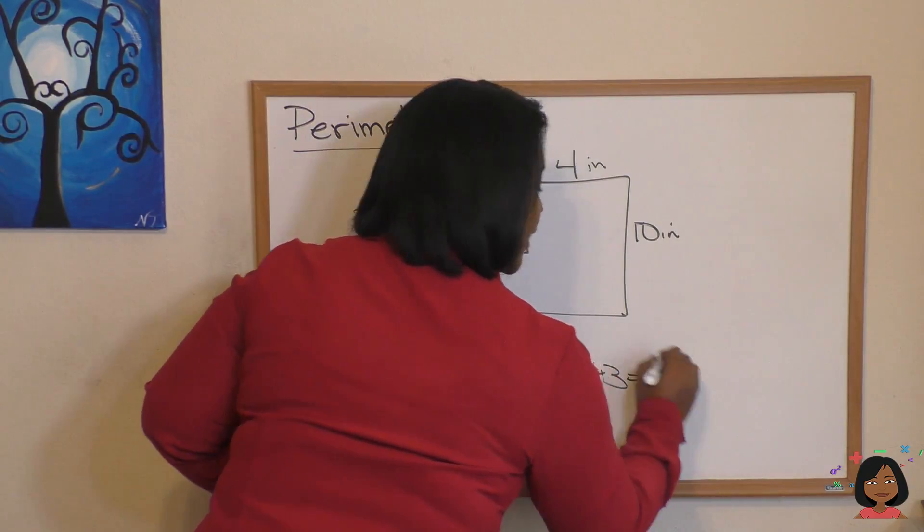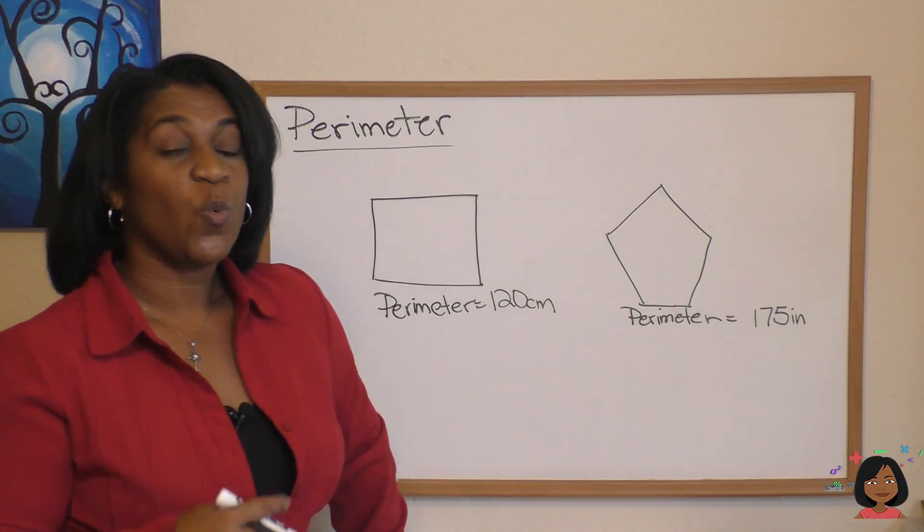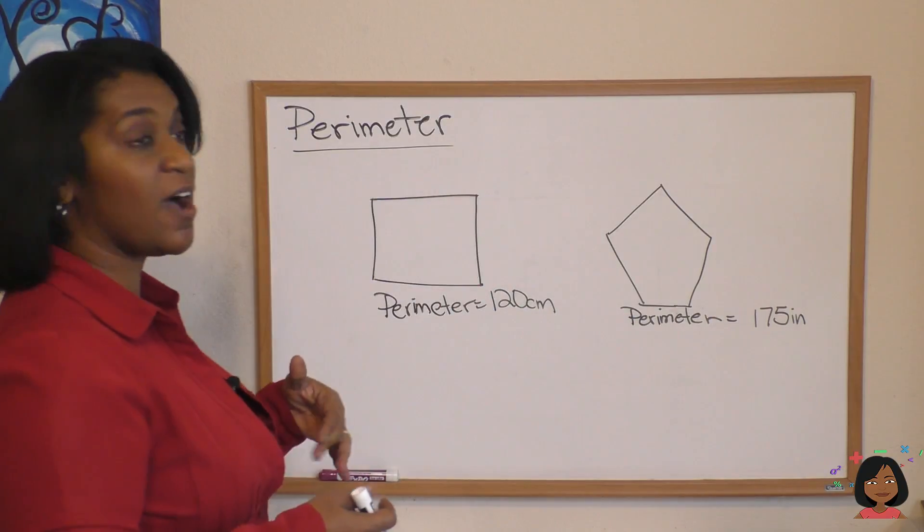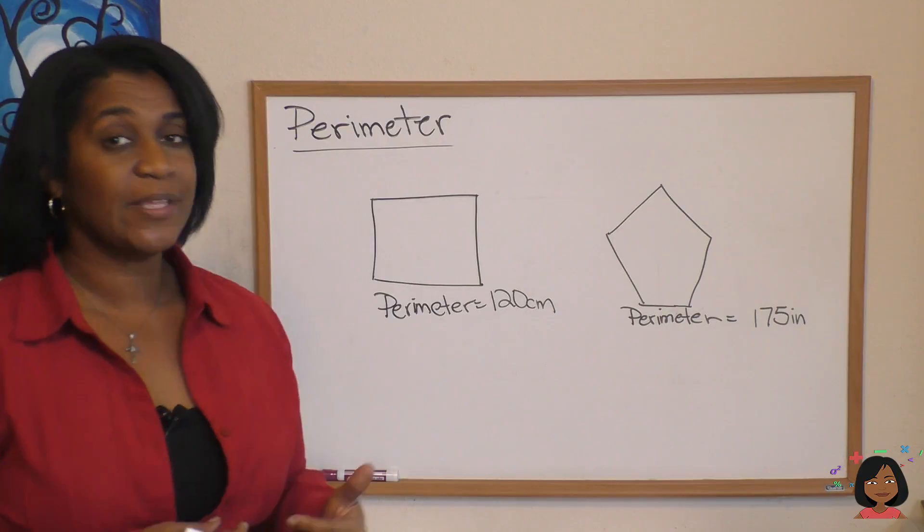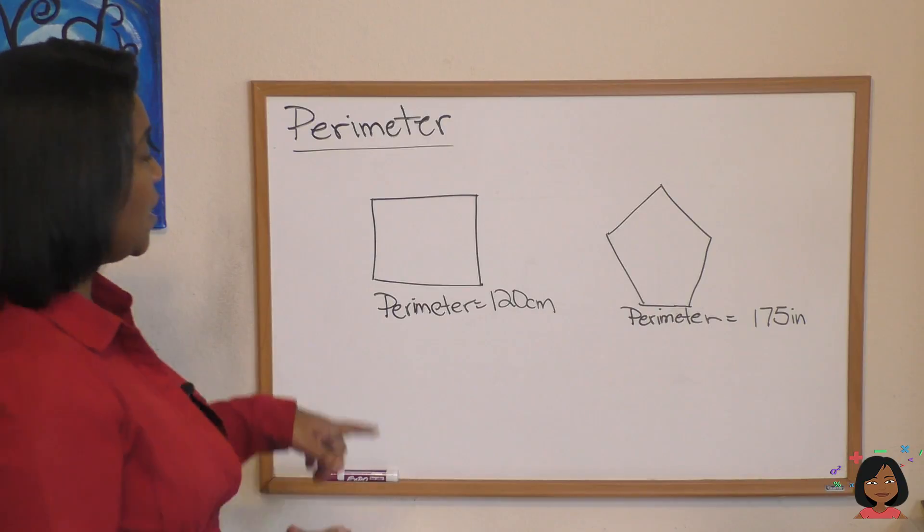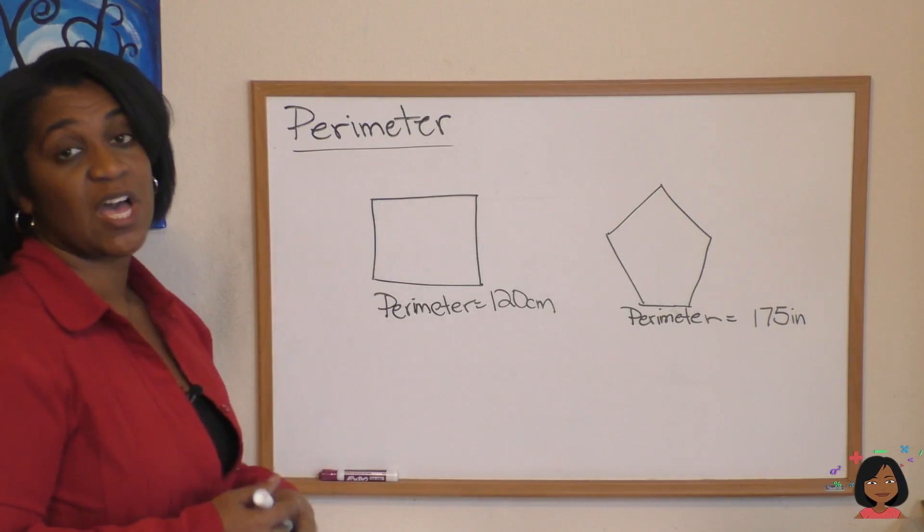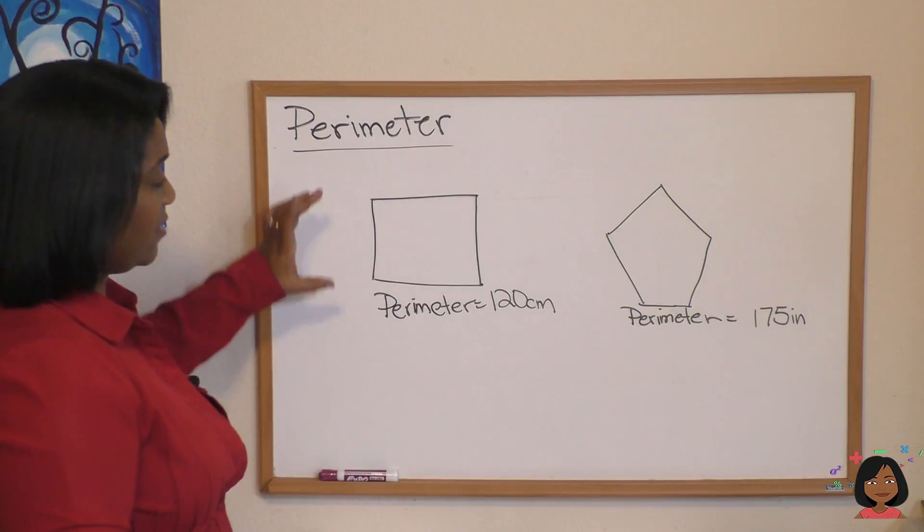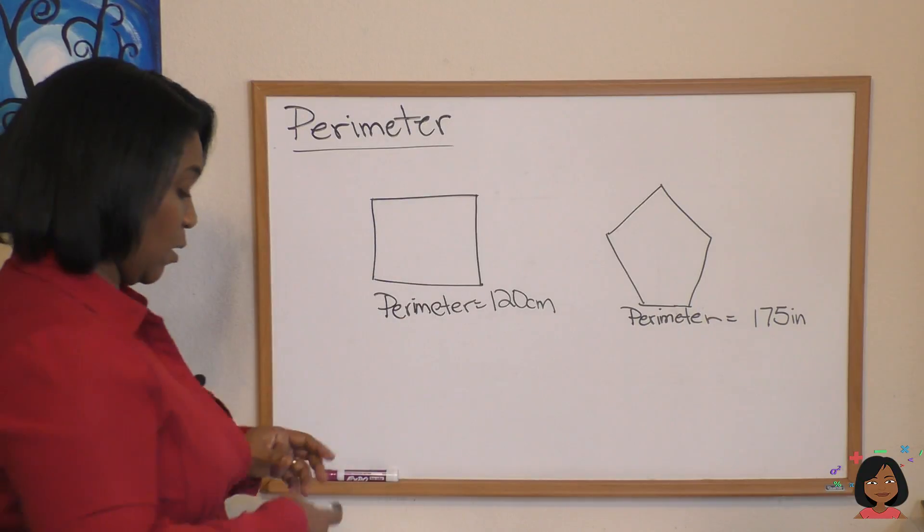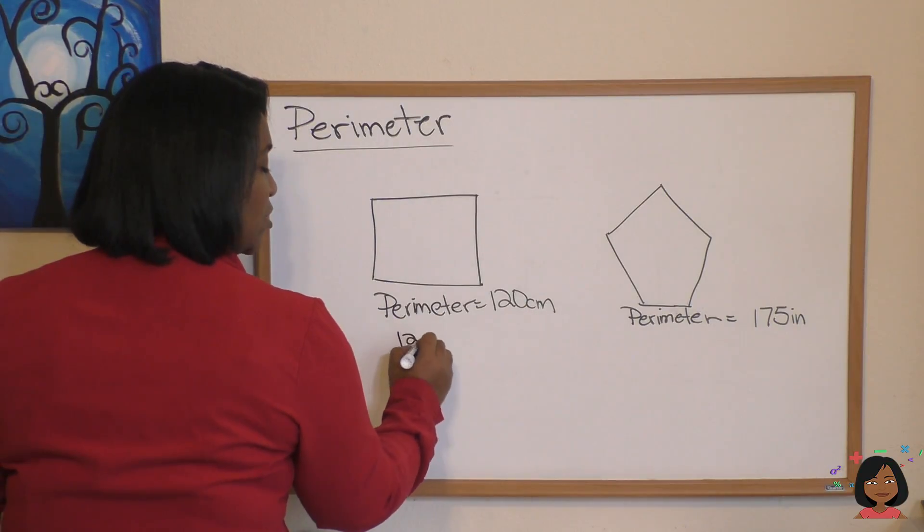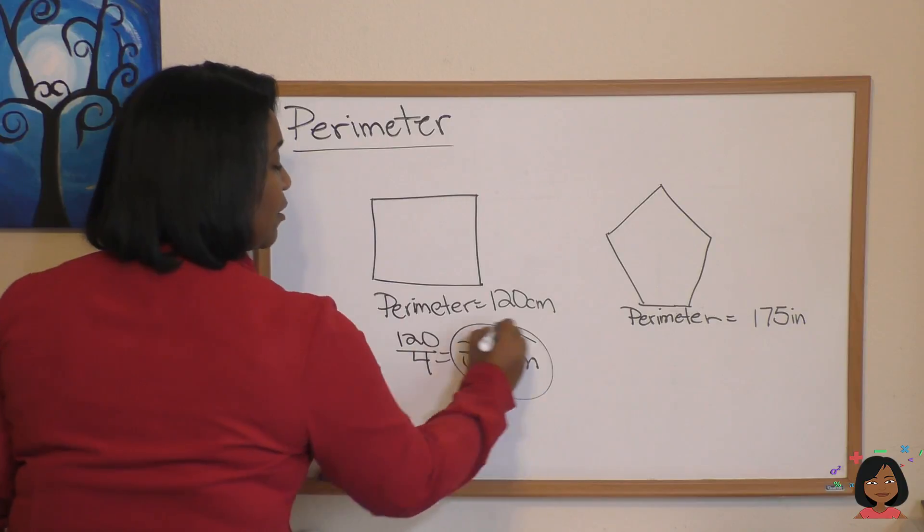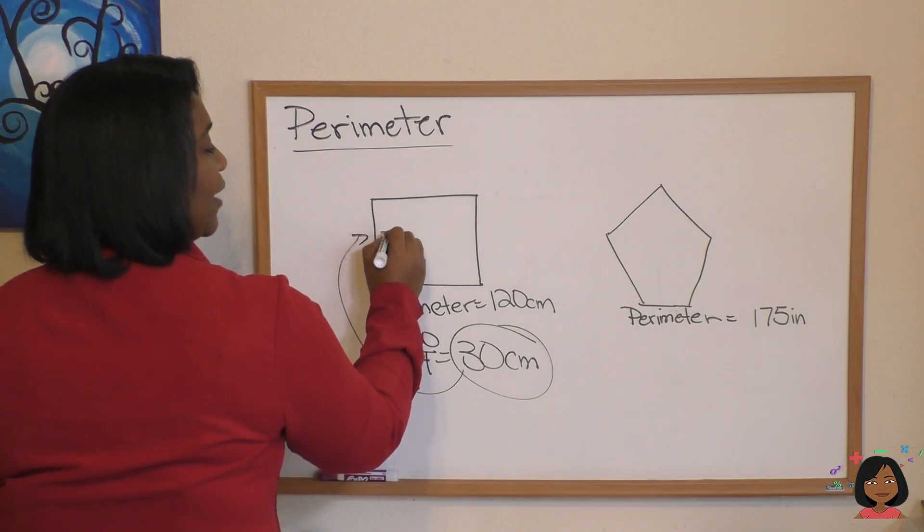One last example. We can go in the opposite direction. What if they gave us the perimeter and then asked us to go ahead and find what the sides were? Well, we can only do this when we have equal sides. Here's what I mean. So they told us that this square, the perimeter is 120 centimeters. Well, we know that means this plus this plus this plus this. We also know when it's a square it means that these sides are equal. So that's a simple division problem: 120 divided by 4, and we know that that gives us 30 centimeters. That means each side is 30.